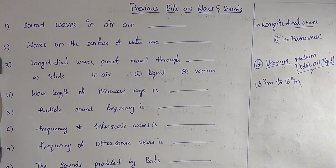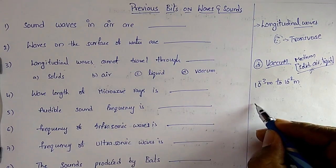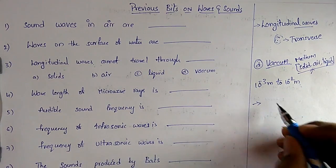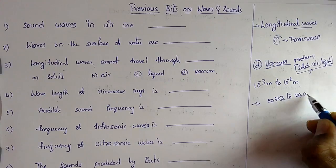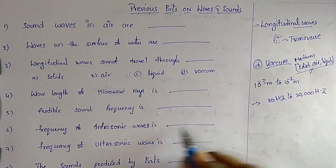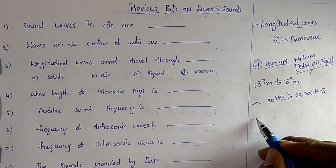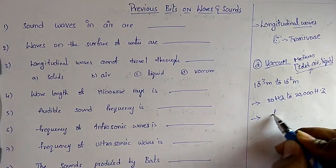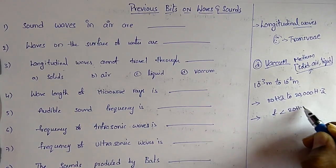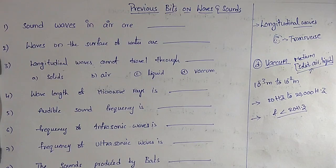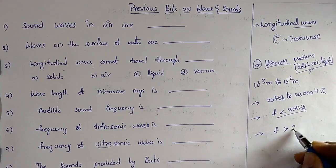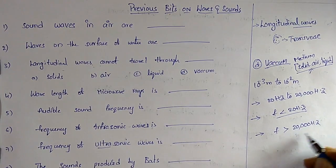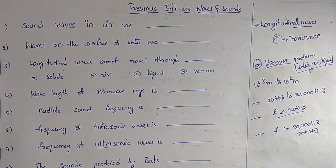Question 5: The audible sound frequency is 20 Hz to 20,000 Hz. Question 6: The frequency of infrasonic waves — 'infra' means less than — is less than 20 Hz. Question 7: Ultrasonic — 'ultra' means high — has a frequency greater than 20,000 Hz, or 20 kHz.